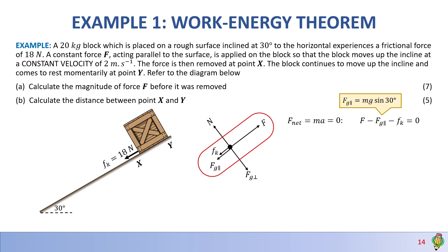This all equals zero. The equation for FG parallel is Mg sine 30 degrees. Taking FG parallel and friction to the other side, we substitute to find F. Our mass is 20, g is 9.8, sine 30 degrees, and the frictional force was given as 18 newtons. Working this out, we get a force of 160 newtons. That's your answer for question A.